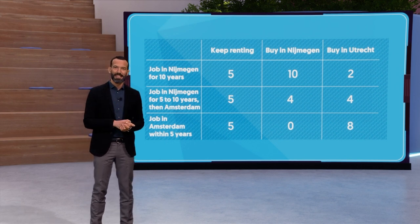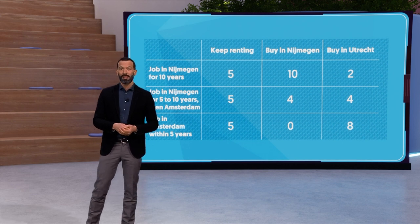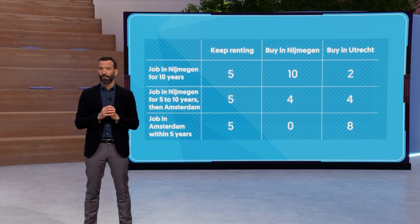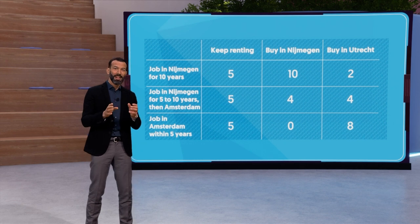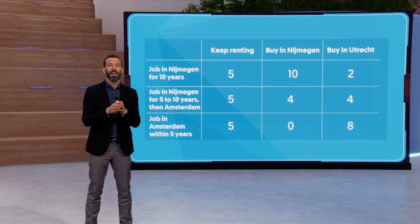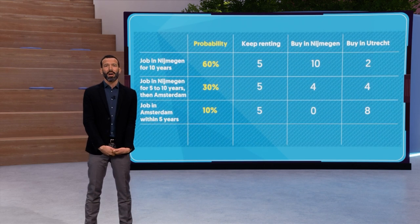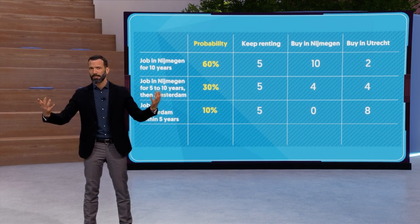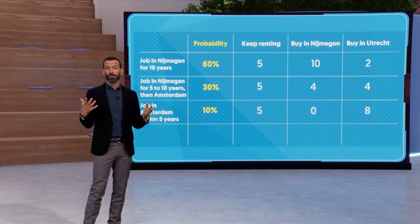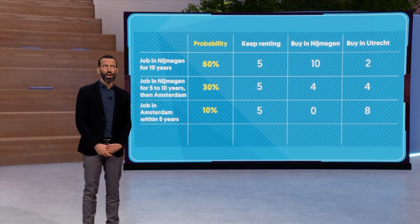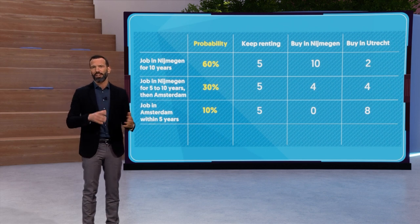This is why step 3 is important. In step 3, we assign weights to each row. To make sure we satisfy principle 4, it is important we assign weights to the rows — and these weights are going to be probabilities reflecting how likely you think the rows are. The weights should sum to 100. For instance, you may think it is quite likely that your job stays in Neumachen for at least 10 years — say, 60%. But there is a chance the company asks you to work from the Amsterdam office: say, a 10% chance within 5 years, and a 30% chance in the longer run of 5 to 10 years.